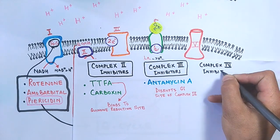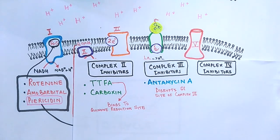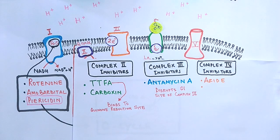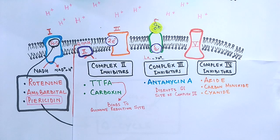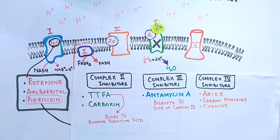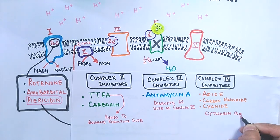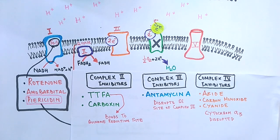And finally we have got inhibitors of complex 4 also, which are azides, carbon monoxide, and cyanide. These compounds disrupt the working of cytochromes of complex 4, particularly the cytochrome a3. So this is all about inhibitors of electron transport chain, and these are the major inhibitors of electron transport chain which we have discussed here.